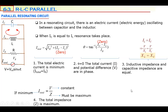We know that I-total equals V divided by Z. V is constant — it is the potential difference of the generator and does not change. Since total current is minimum and V is constant, Z must be maximum. Total impedance is maximum in parallel resonating circuits. I-total is minimum and Z is maximum.